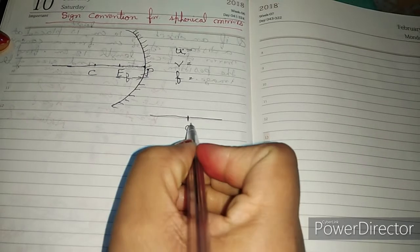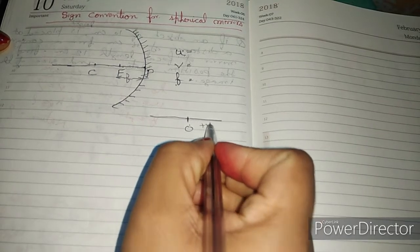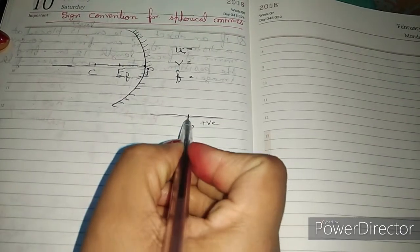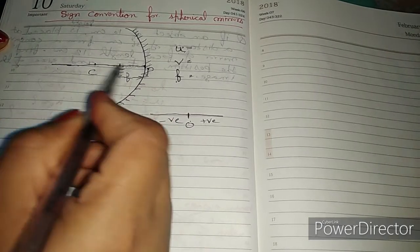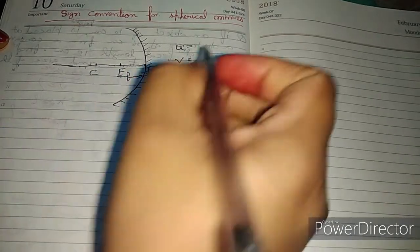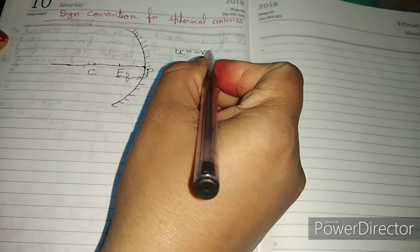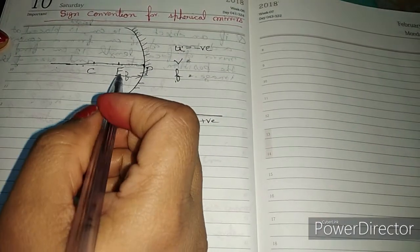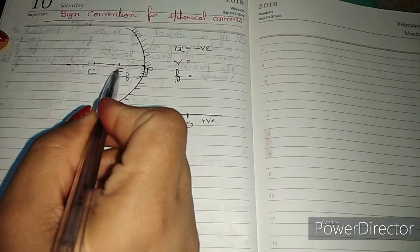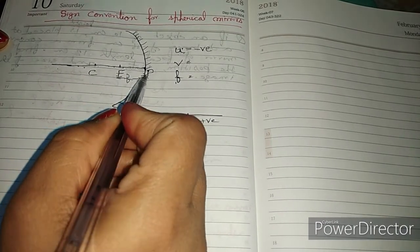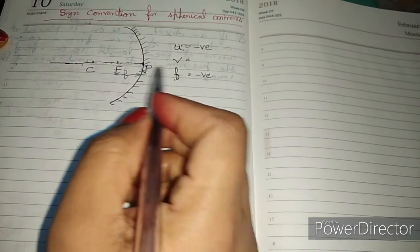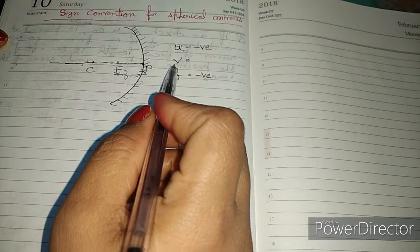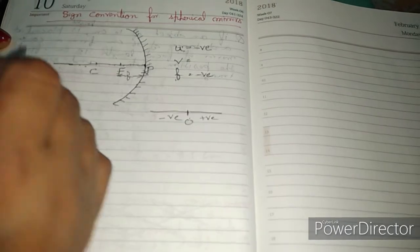So we have right side positive integer and left side negative integer. When we place on the left side then what will be negative? And F is in front of the mirror, therefore F is always negative in the concave mirror.